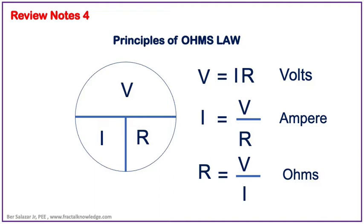To find the voltage, multiply the current and resistance. To find the current in amperes, divide the voltage by the resistance. To find the resistance, divide the voltage by the current. This circle diagram is useful — you can write it immediately at the back of your test question during the licensure exam. Remember, V is always on top; you can interchange the I and R.